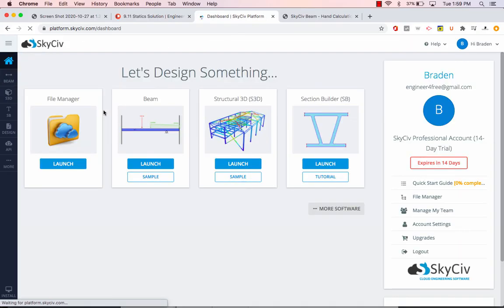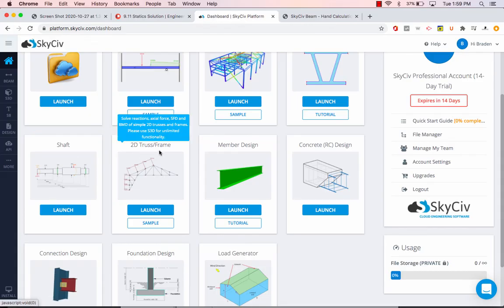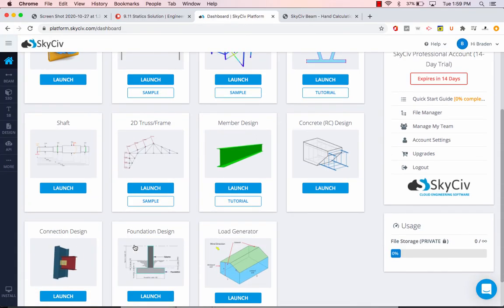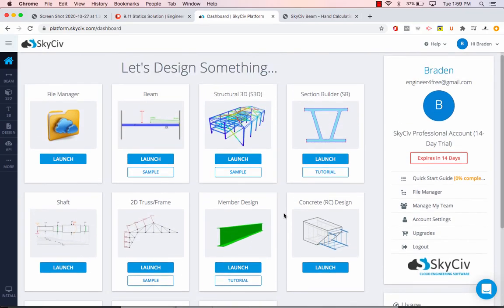Also, just while we're here, they don't only have the bending moment diagram tool, they also have a ton of other stuff. We were just using the beam software or the beam tool, but they also have 3D section builder, shaft calculators, truss and frames, member design, reinforced concrete, connection design, foundations and loads. This is great, there's so much stuff in here, but if you're looking for bending moment diagram and shear force diagram validation or verification, of course this is the place to be.